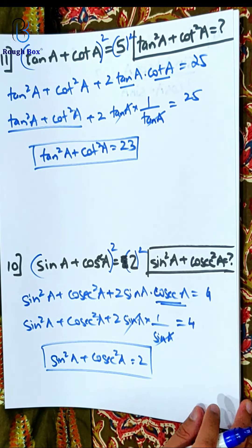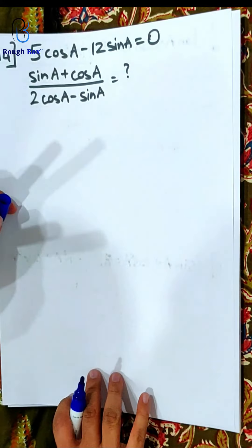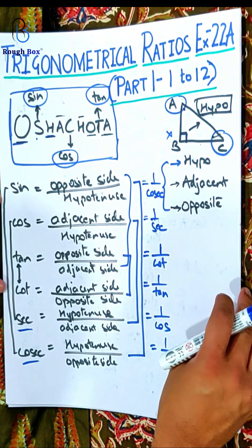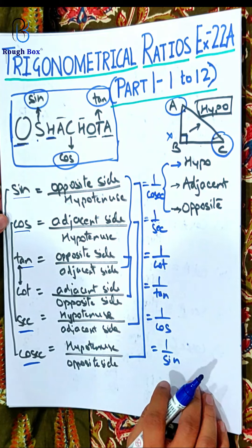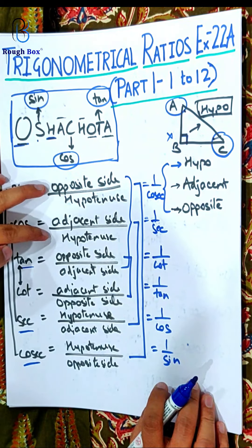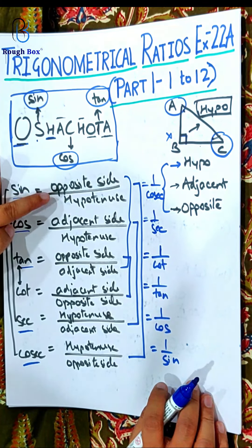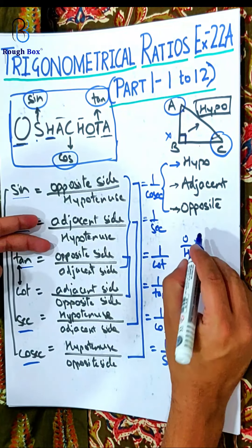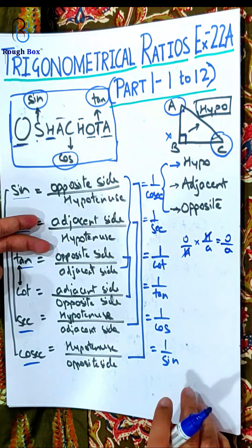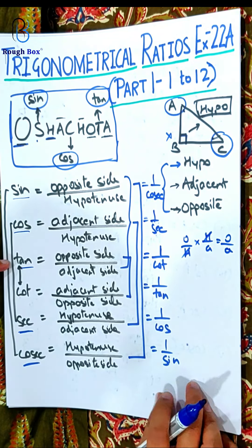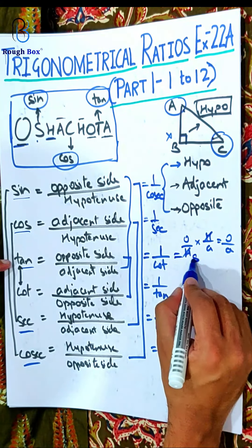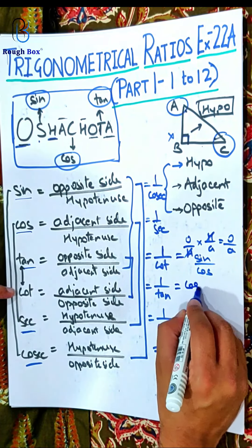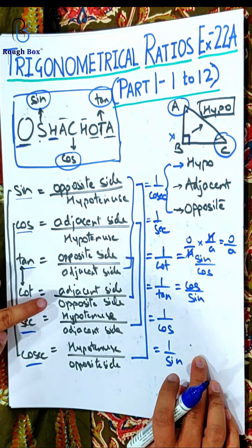It is a very simple type of sum — if you are focused, 100% you will get it. Sum number 14 is slightly different and requires a little more understanding. If you look at sin and cos and tan — what is the connection? If I divide sin by cos: opposite upon hypotenuse divided by adjacent upon hypotenuse — the hypotenuses cancel — and I get opposite upon adjacent, which is tan. So tan can also be written as sin upon cos. Likewise, cot can also be written as cos upon sin.